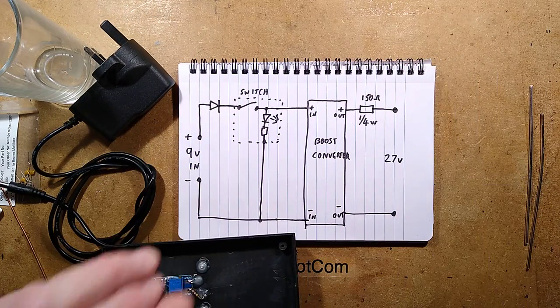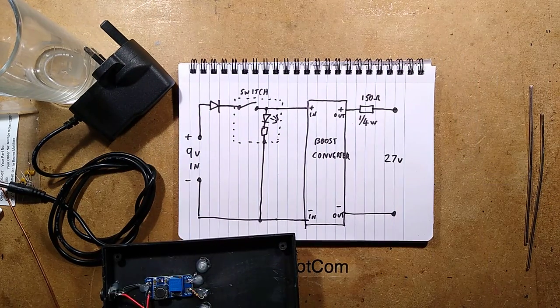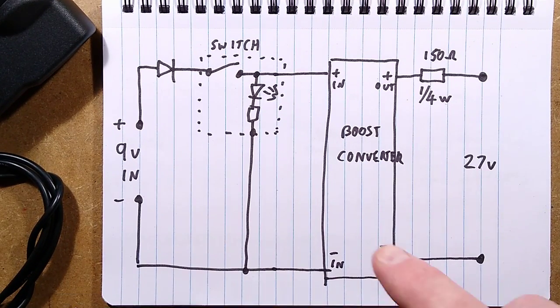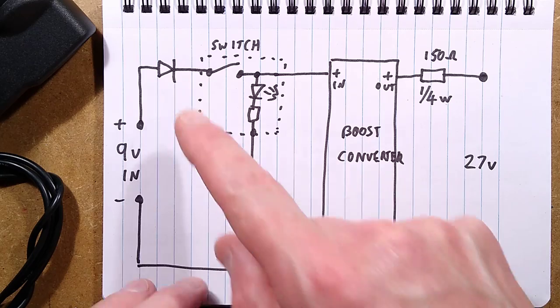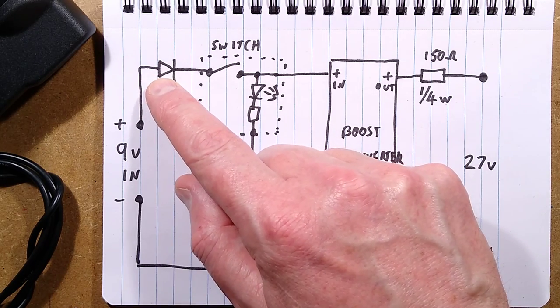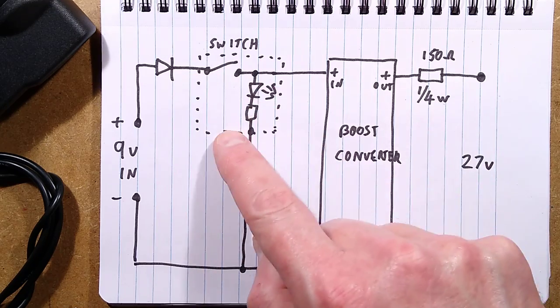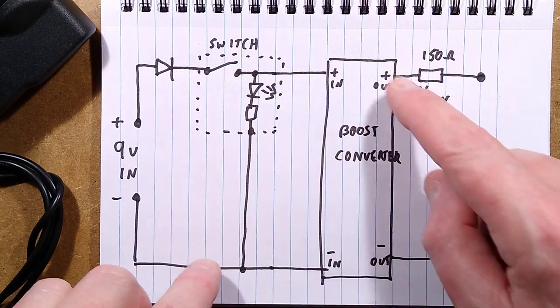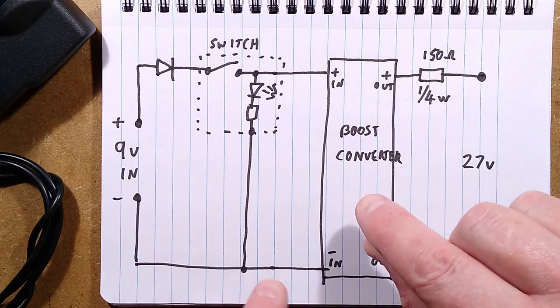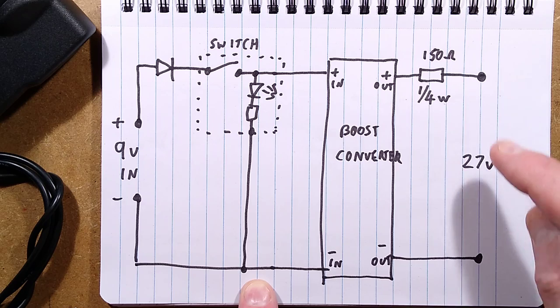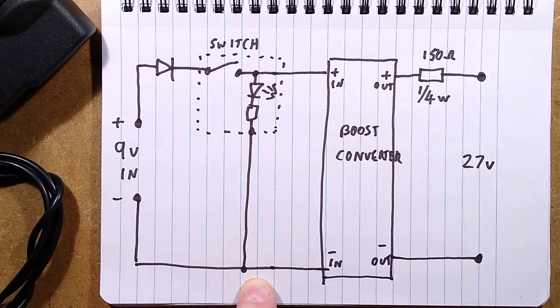Let's zoom down onto this. So what we have here, the 9 volts comes in, goes through that diode, the dead diode. I would have used a 1N4001 1-amp diode there. It goes through the switch which has a built-in LED and resistor. When you turn it on, it goes to that boost converter that is programmed on the voltage, set to about 27 volts, and they've got that quarter-watt 150-ohm resistor.